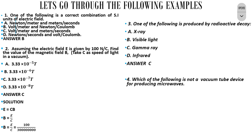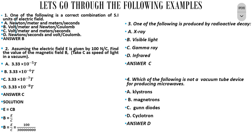Question 4. Which of the following is not a vacuum tube device for producing microwaves? The options are klystron, magnetron, condiodes, and cyclotron. The correct answer is option D — cyclotron. The rest can be used to produce microwaves, apart from the cyclotron.